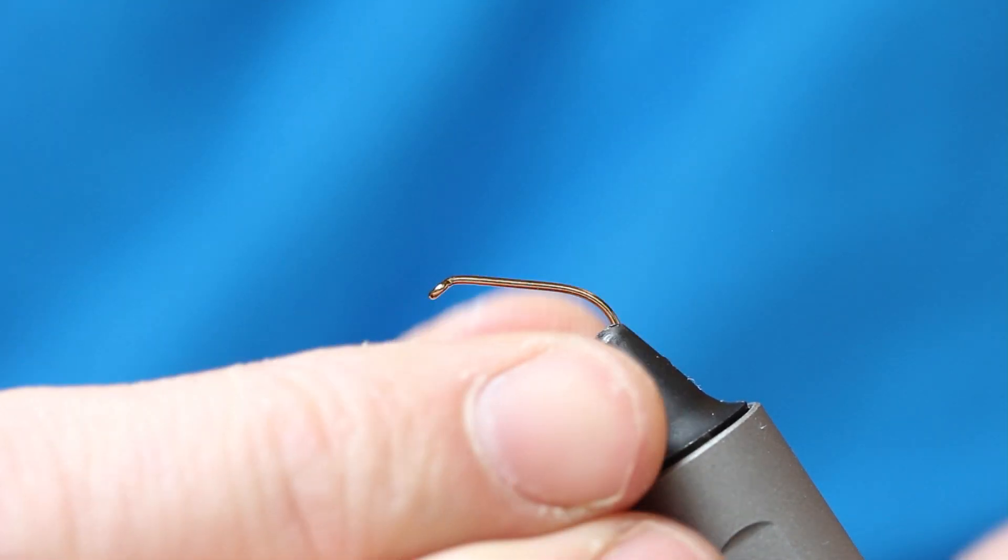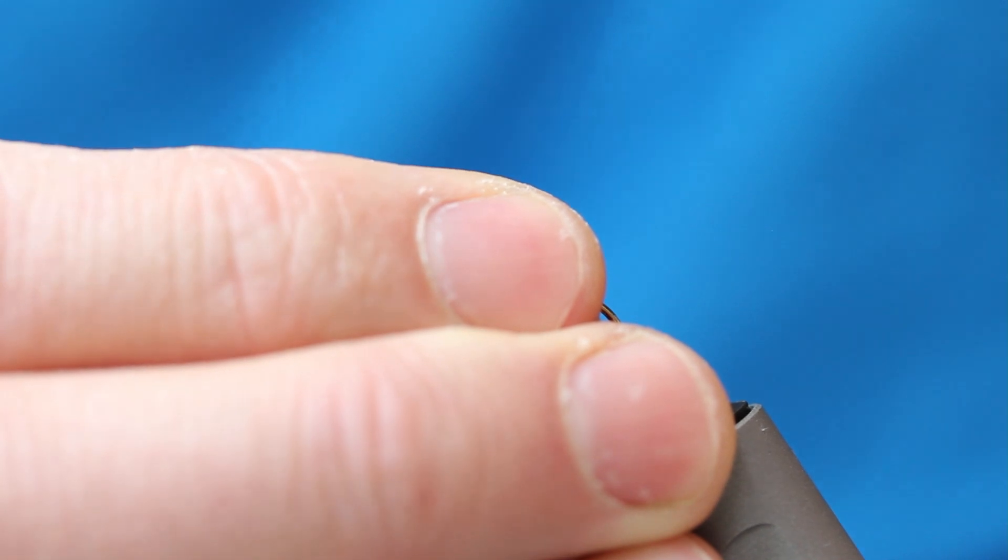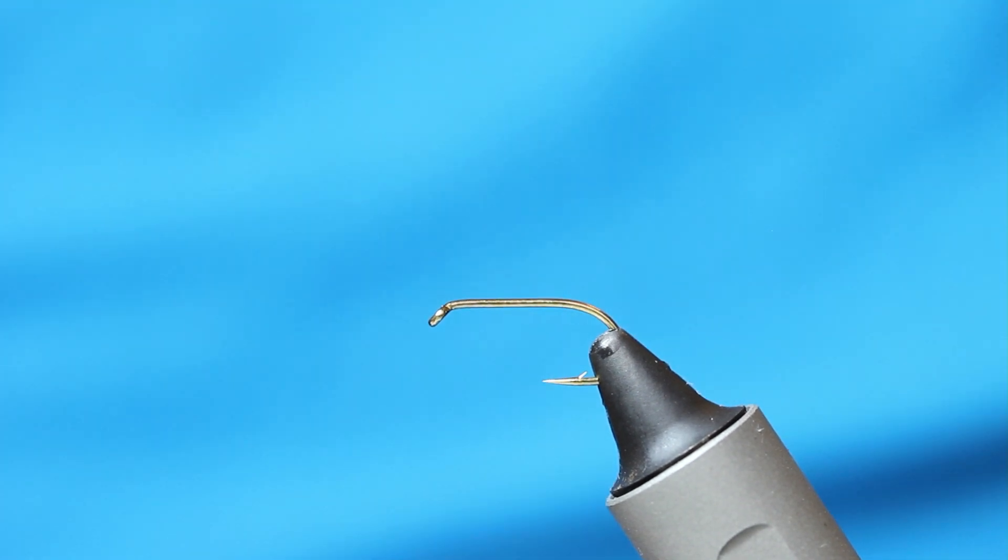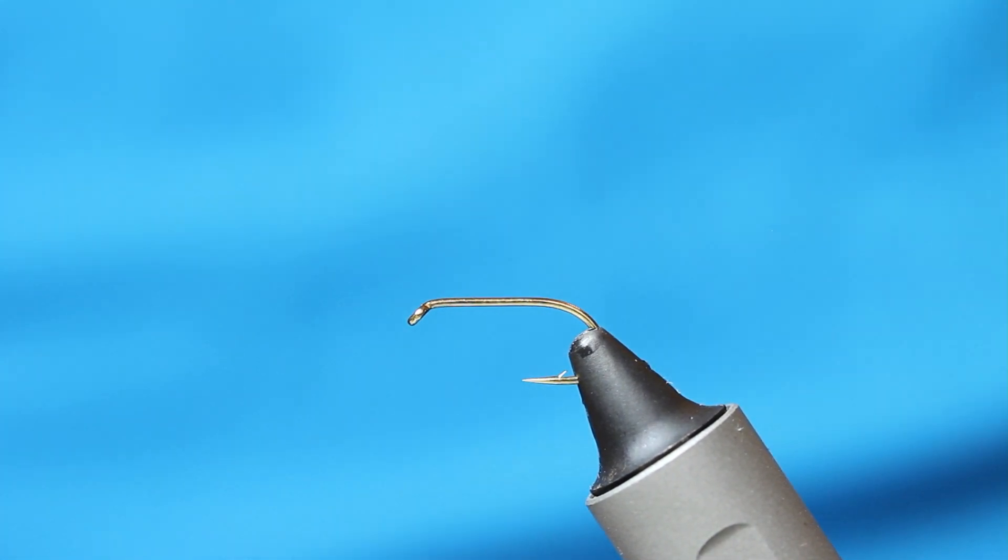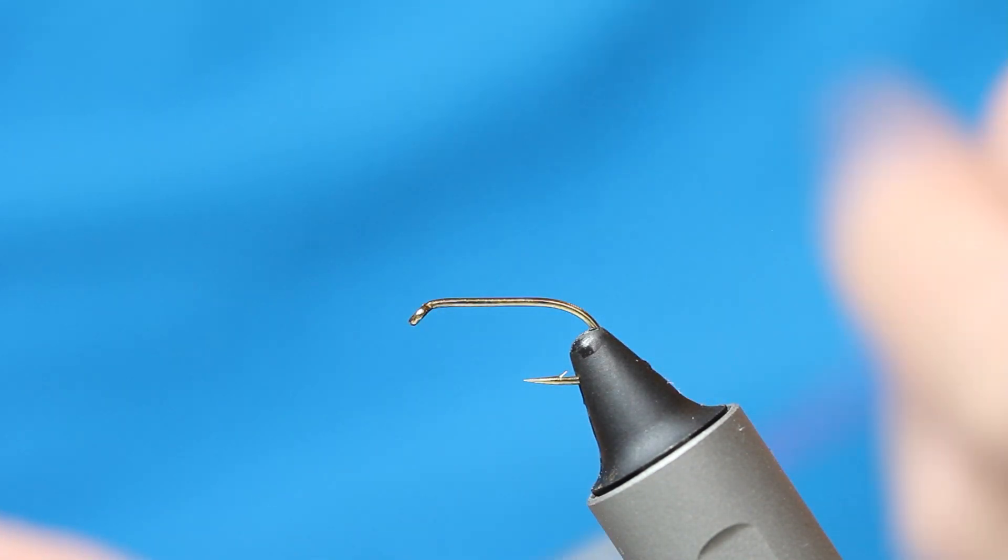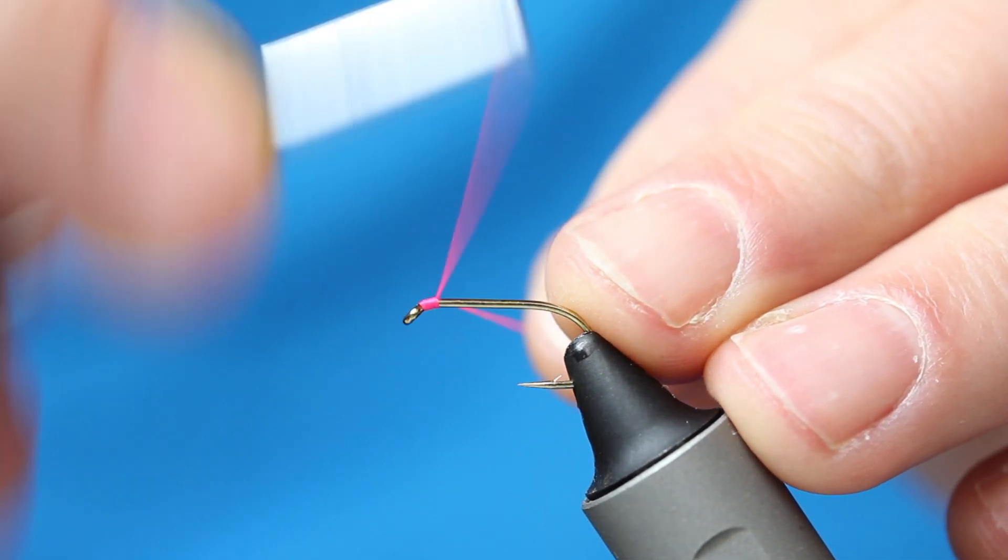So the first thing I'll do is put out a hook in the vise. Now this is a hook that everybody will be familiar with. It's just a standard wet fly, size 10. Just make sure I get that in very straight. And I've got here Glow Bright floss. I can't see the number on that, I'll put it up with the tie-in, but it's a bright pink one.